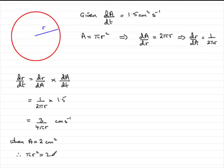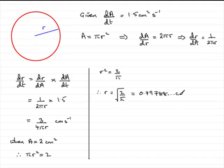If we rearrange this for r by dividing both sides by π, we get r² equals 2/π. Therefore, r equals the square root of 2/π. If you work that out on a calculator, it comes to 0.79788 and so on centimeters.